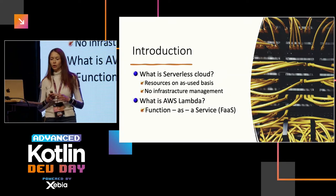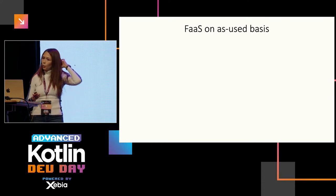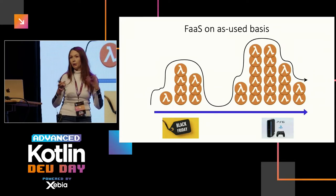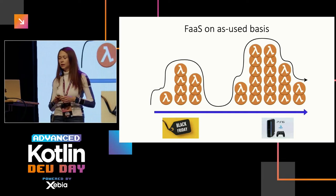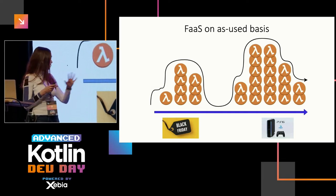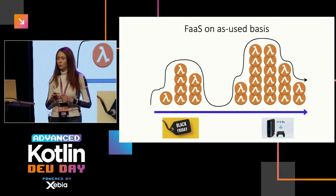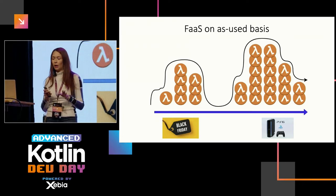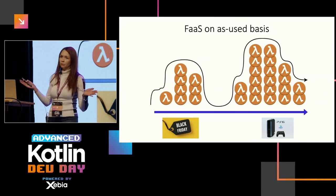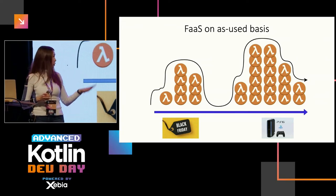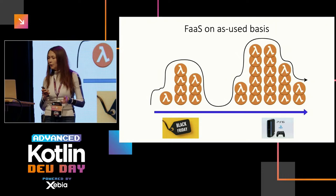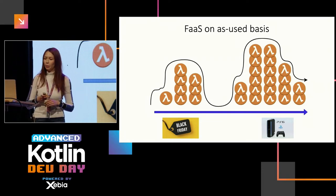AWS Lambda is a very good example of serverless — it's a function as a service. If I have some business logic, say I'm selling products and it's Black Friday, requests come in and everyone wants to buy something on sale. My function scales up. As soon as the sale is over, everyone's run out of money or it's nighttime, there are no requests and I scale down to zero. Then I decide to sell a PlayStation 6 and everyone goes crazy — I scale up again.